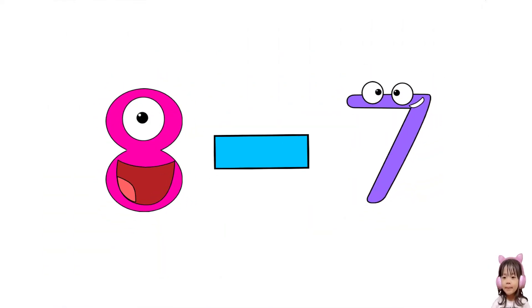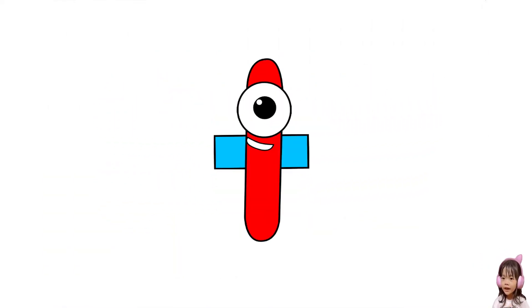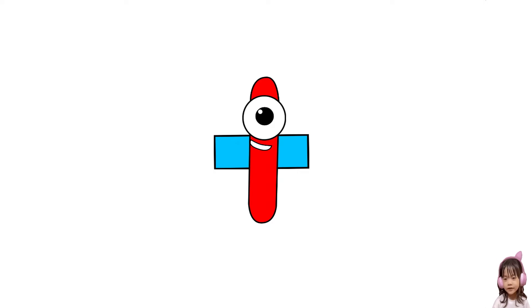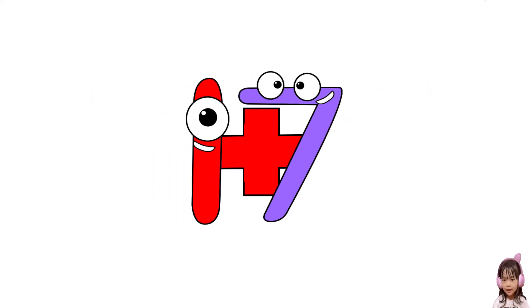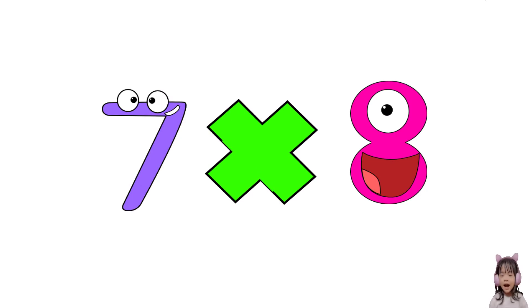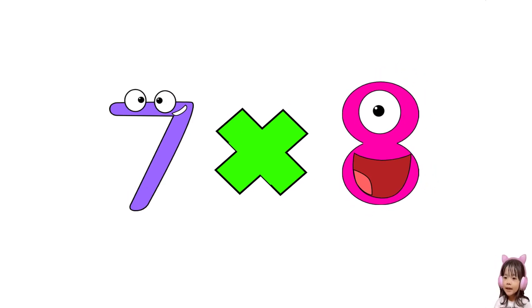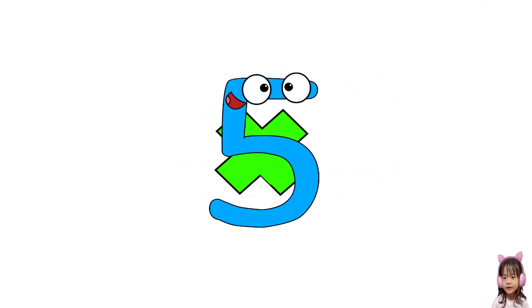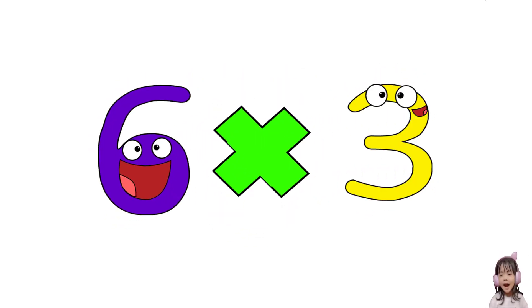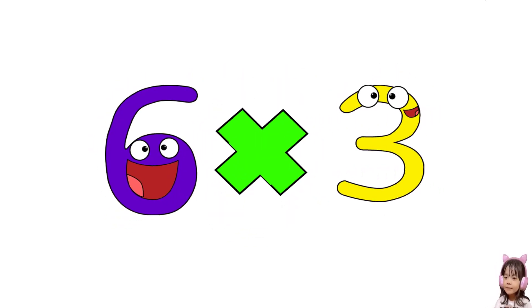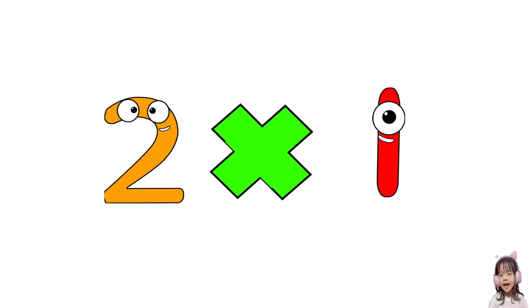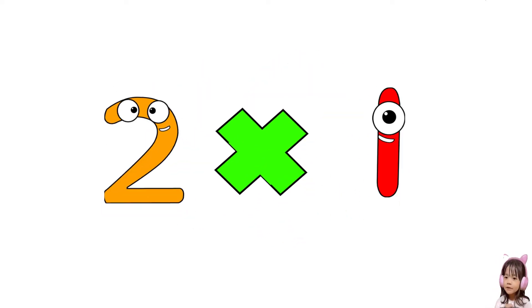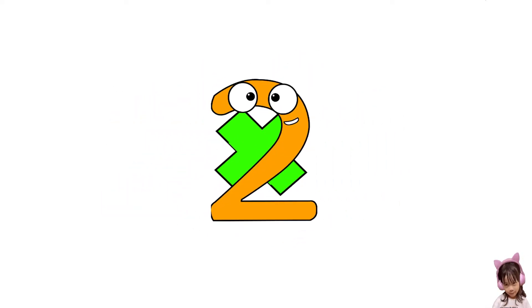Eight. Eight minus seven equals one. Eight plus seven equals seventeen. Seven times eight equals five. Six times three equals eight. Two times one equals two.